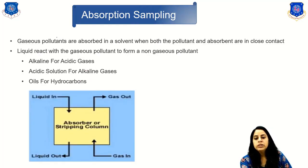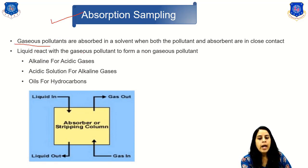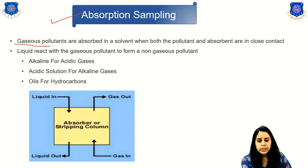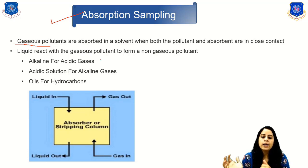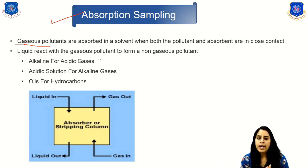The next method is absorption sampling, used for gaseous pollutants. Gaseous pollutants are absorbed in a solvent when both the pollutant and absorber are in close contact. The liquid reacts with the gaseous pollutant to form a non-gaseous product. Examples include alkaline solutions for acidic gases, acidic solutions for alkaline gases, and oil for hydrocarbons.